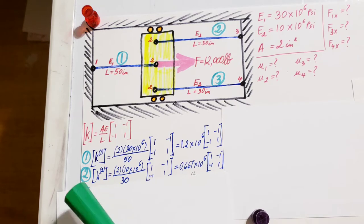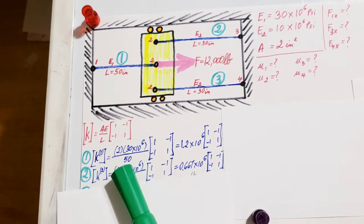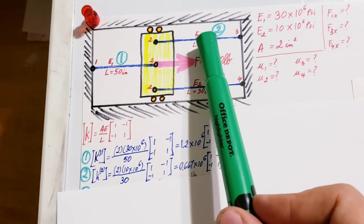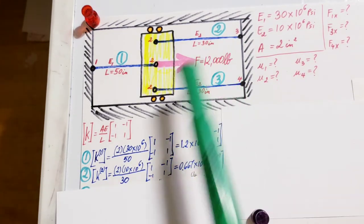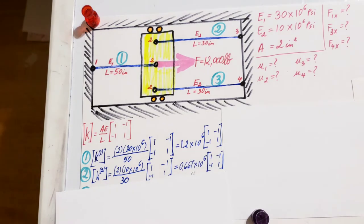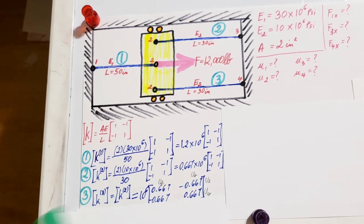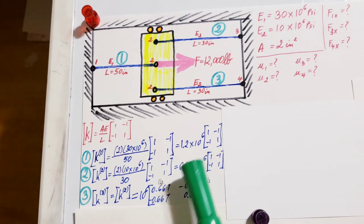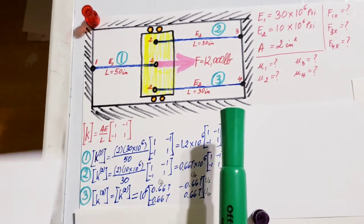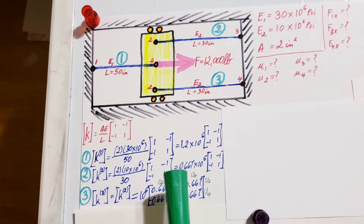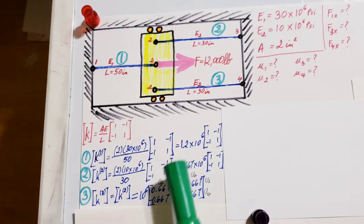Element 2: E2 = 10 times 10^6, length is 30. We'll plug it in. Element 3 equals element 2, so it will be the exact same. It's beneficial to factor out something that you can take out from all three.